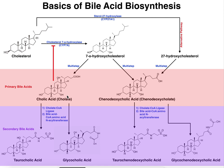These bile acids can be processed further into what we call secondary bile acids, which we'll discuss in a minute. But first, there's another pathway by which we can synthesize chenodeoxycholic acid — what we call the alternative pathway — which requires a mitochondrial enzyme. In the mitochondria, we can get cholesterol in, and there's an enzyme called sterol 27-hydroxylase, also a cytochrome P450 enzyme (CYP27A1). This enzyme hydroxylates cholesterol at the 27 position, which is on the tail of cholesterol, and through multi-step processes, 27-hydroxycholesterol is converted into chenodeoxycholic acid, one of our primary bile acids.